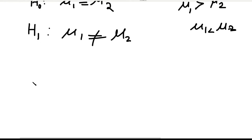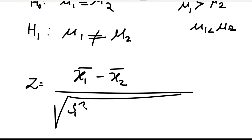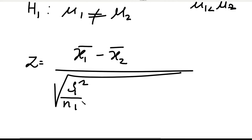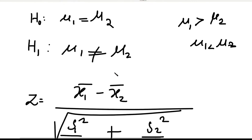Next, we calculate the Z value. The formula is: Z = (x1 bar − x2 bar) divided by the square root of (S1² / n1 + S2² / n2). Substituting: n1 = 400, n2 = 400, x1 bar = 2,500, x2 bar = 2,200, S1 = 400, S2 = 550.